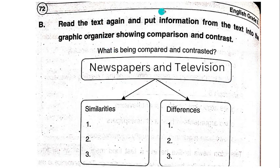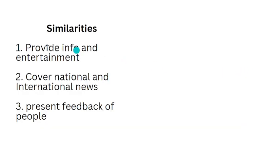Read the text again and put information from the text into the graphic organizers showing comparison and contrast. What is being compared and contrasted? Newspapers and televisions. Similarities: They both provide information and entertainment. They both cover national and international news and present feedback of people.